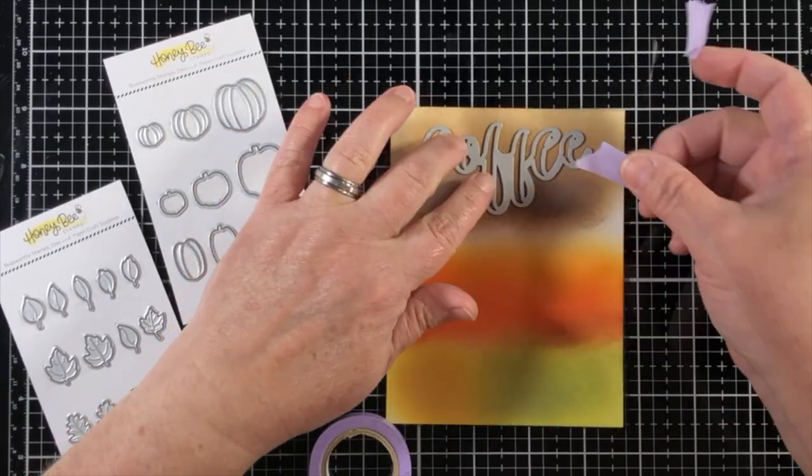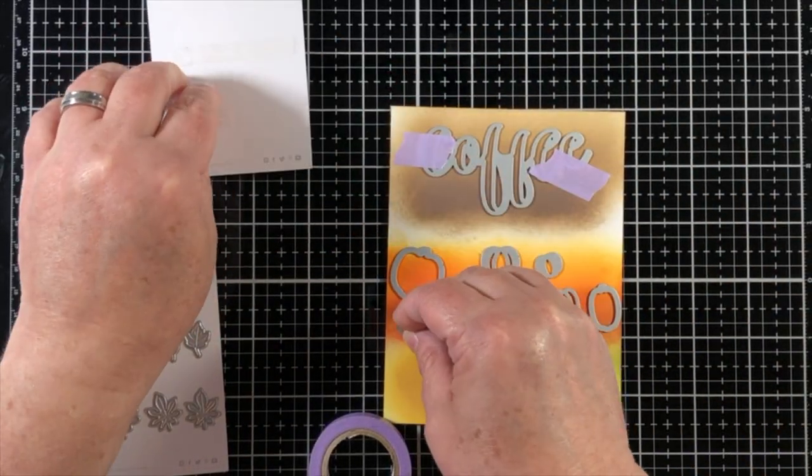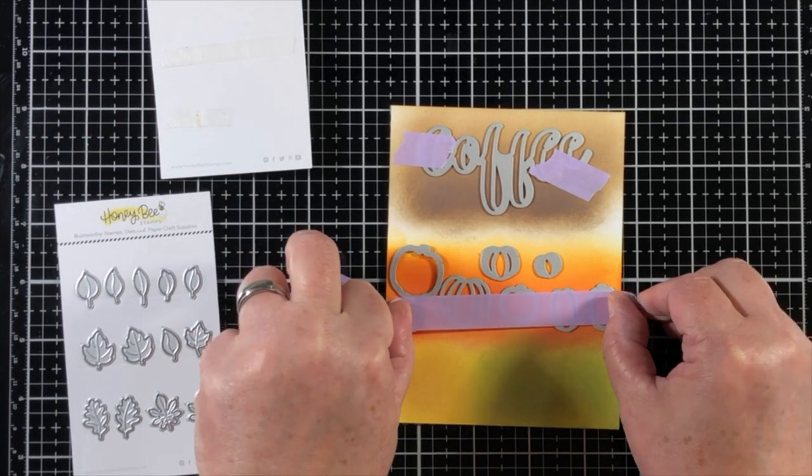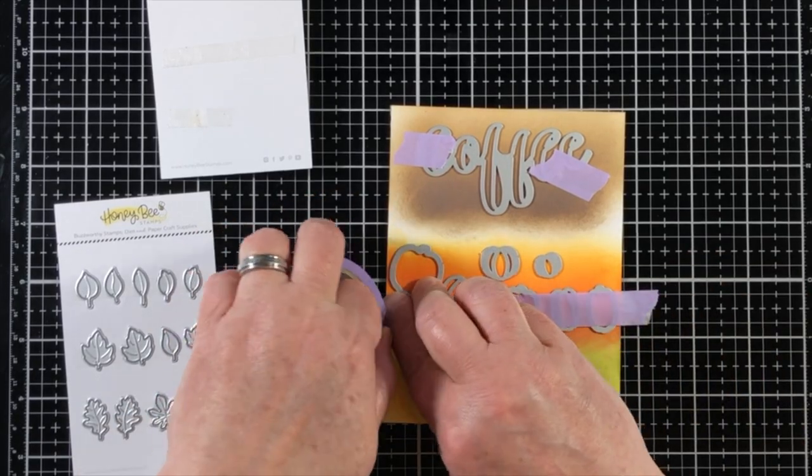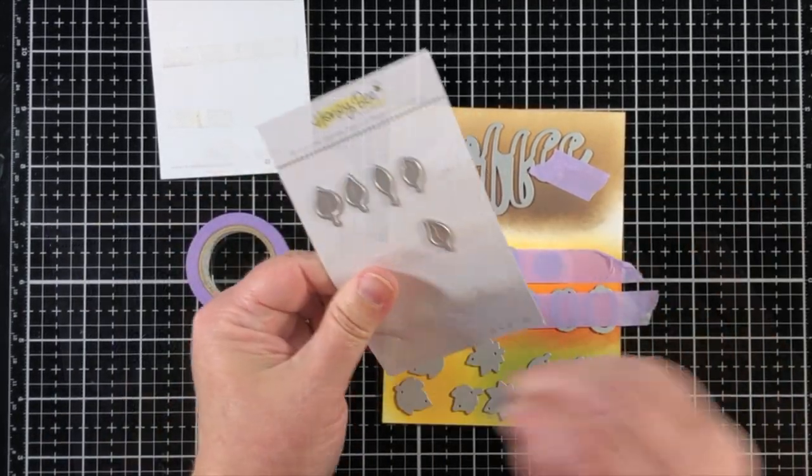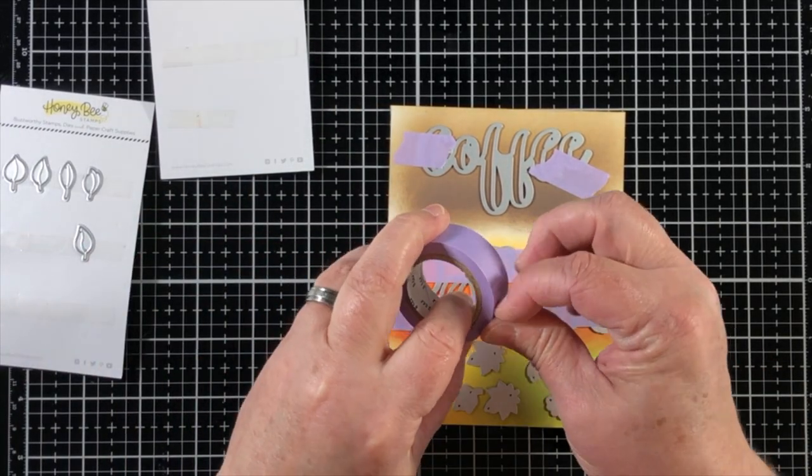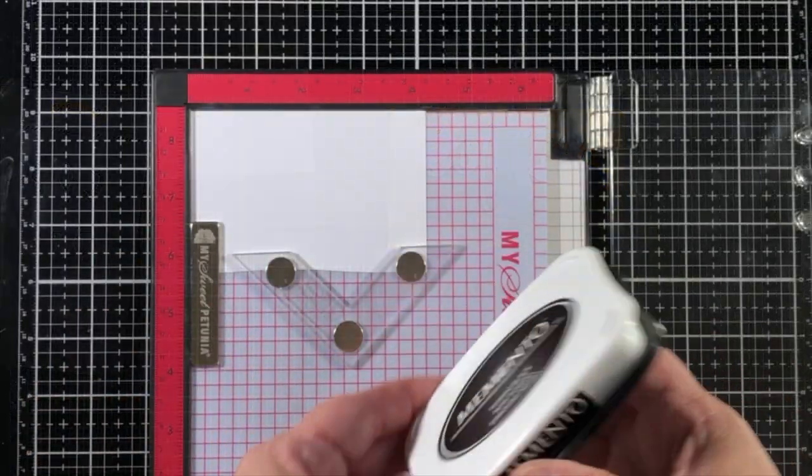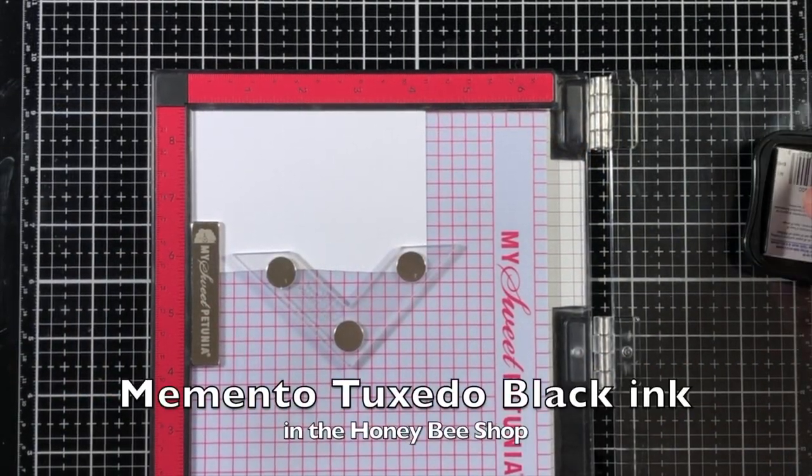Once I have the dies put in place, I'll use some purple tape or some washi tape and just put it across and hold everything down. Using small dies can be a bit tedious, but this helps me make it easy without having a thousand small pieces of tape.